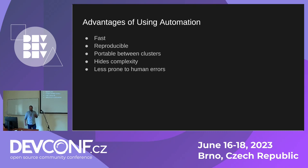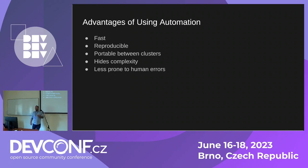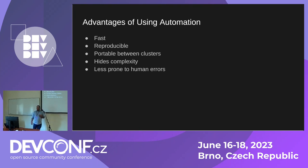The advantages of automation are that it is fast — you just activate it and get what you want. It is reproducible: today, in a month, in a year, it will do the same things. It is portable between clusters — use it on your cluster today and your customer's cluster tomorrow. It hides a lot of complexity; you don't need to be an expert on everything the automation contains. And it is less prone to human errors.